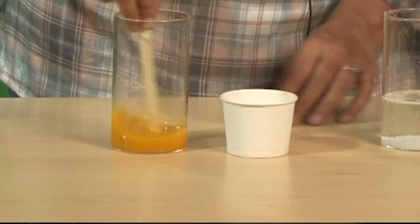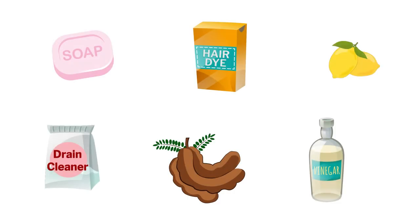Now that we have engaged them in discussion, we can start talking about acids, bases, and indicators. We discussed the definitions and properties of acids and bases first. In order to understand indicators, we decided to test how various substances reacted with turmeric.